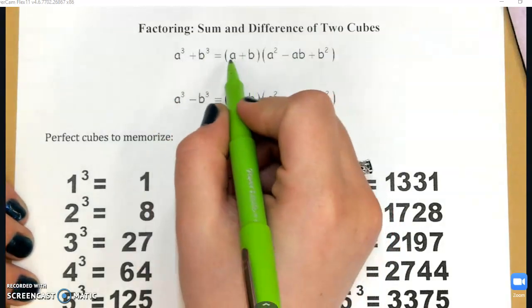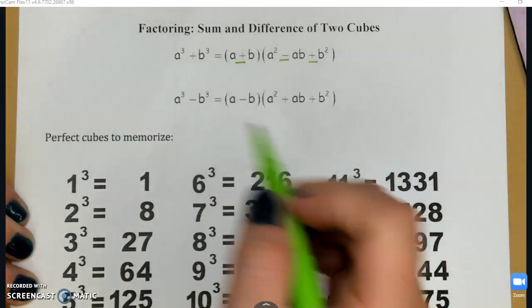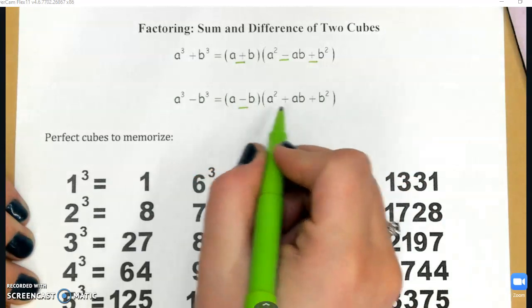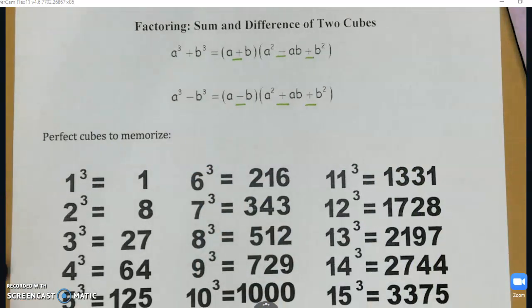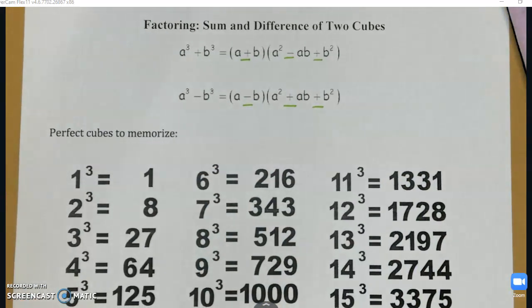So for sum of cubes, you have plus, minus, plus. And for difference of cubes, you have minus, plus, plus. So as long as you can get the a, b, a², ab, b² straight in your head, then you just need to distinguish between when you're adding and when you're subtracting.